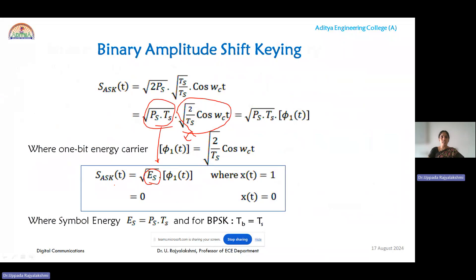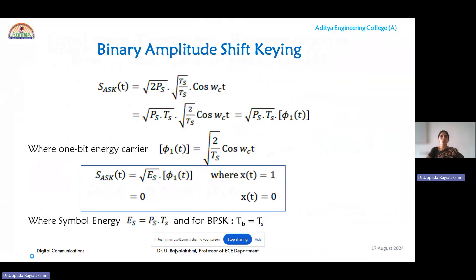We represent √(2/TS) · cos(ωc·t) as the one-bit energy carrier, φ₁(t). So the ASK signal can be rewritten as √Es · φ₁(t) for data bit 1, and 0 for data bit 0, where Es is the symbol energy equal to Ps × TS. For binary ASK, remember that bit duration and symbol duration are the same because only one data bit — either 0 or 1 — is transmitted per symbol. This expression represents the ASK signal in terms of symbol energy and one-bit energy carrier to evaluate the Euclidean distance.